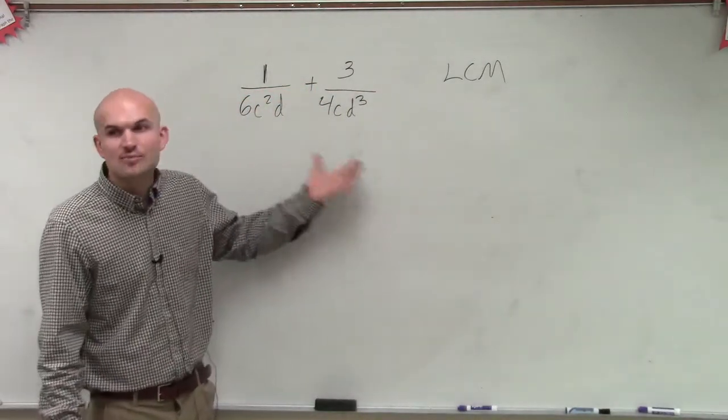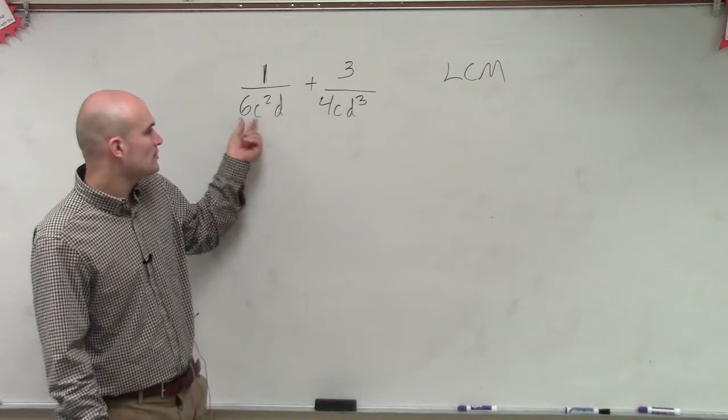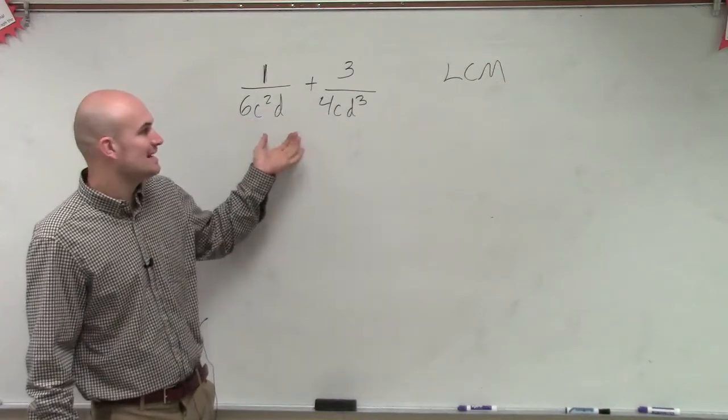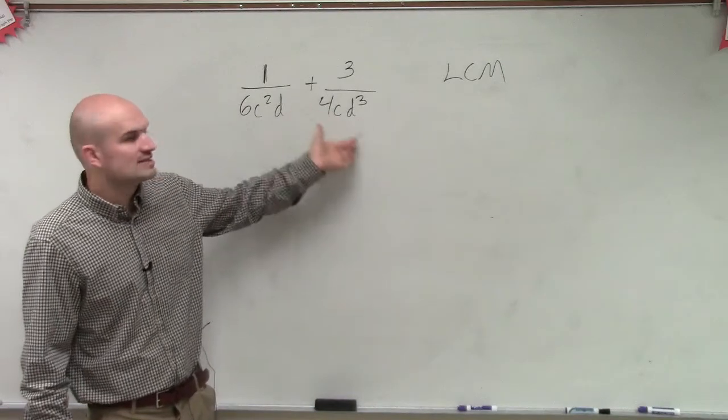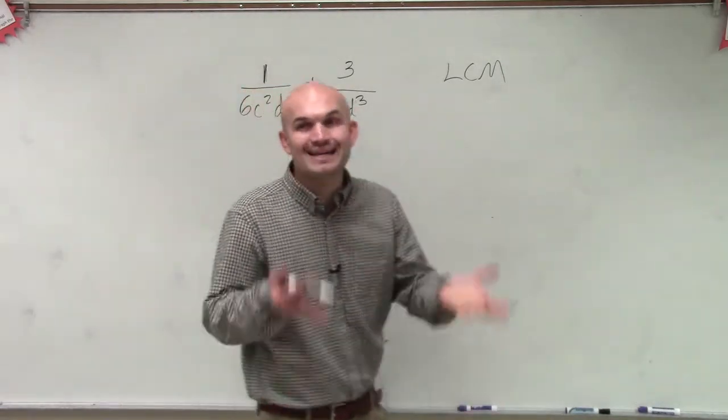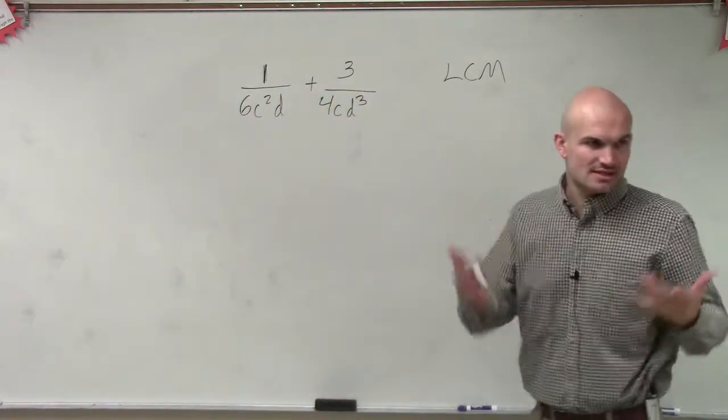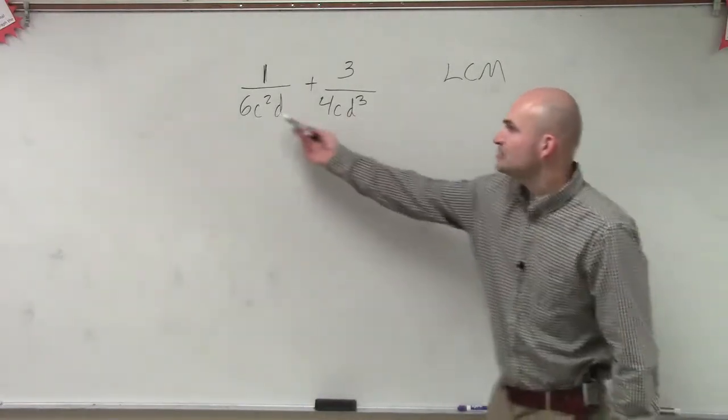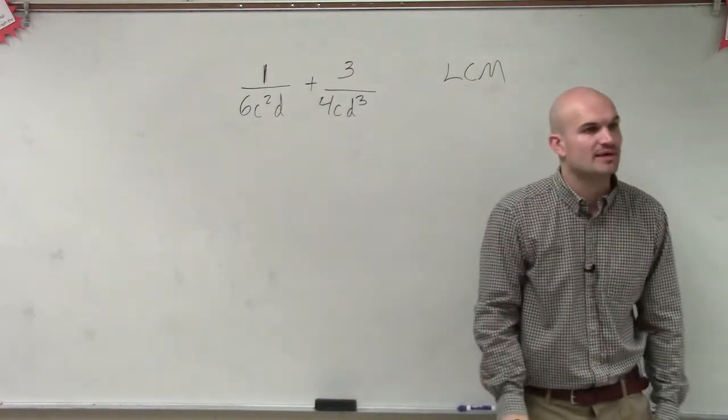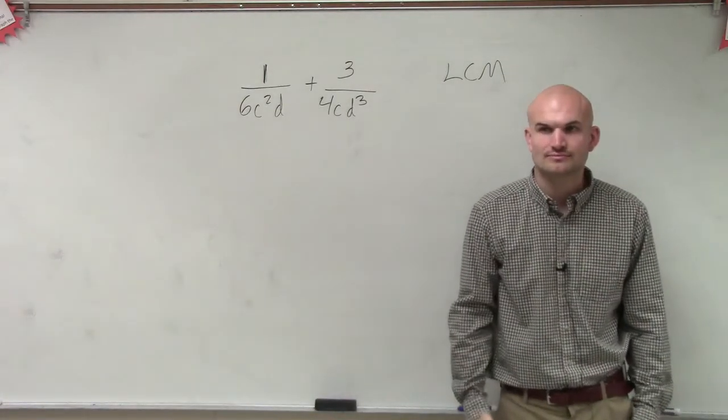So what we need to say is, what is the smallest multiple that both 6c²d and 4cd³ both divide into? So if that looks a little bit crazy just on the front, let's just look at it by numbers. Between 6 and 4, what is the smallest number that both 6 and 4 divide into? 12.